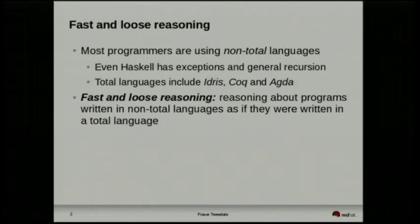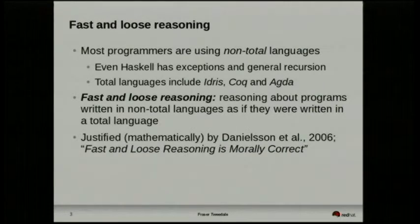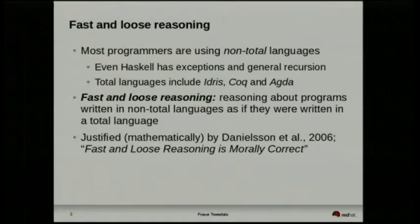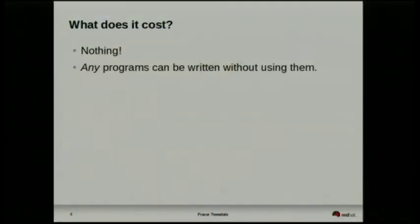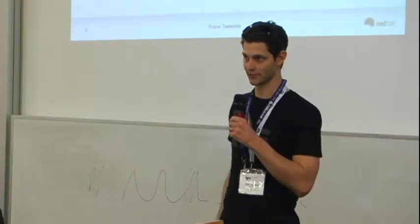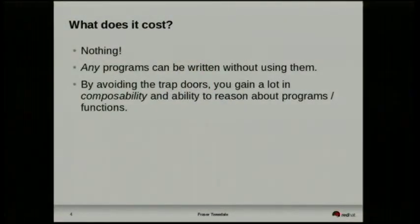Fast and loose reasoning is the idea that you should reason about programs written in non-total languages as if they were written in a total language. This idea is justified mathematically by Danielsson et al. in a 2006 paper called 'Fast and Loose Reasoning is Morally Correct.' It turns out any program at all can be written without using any of those problematic things. By avoiding these trap doors, you gain a lot in terms of composability of programs and the ability to reason about their behavior.